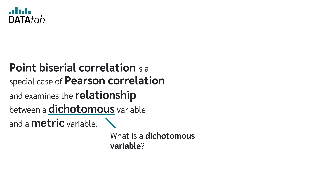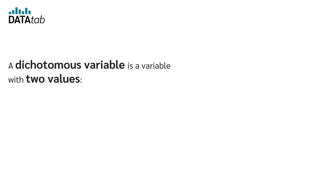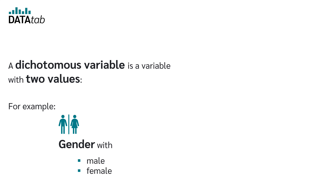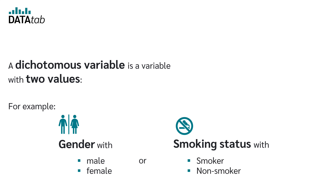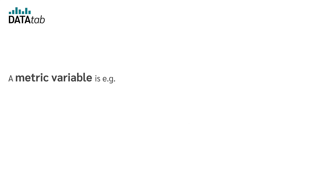What is a dichotomous variable and what is a metric variable? A dichotomous variable is a variable with two values — for example, gender with male and female, or smoking status with smoker and non-smoker.